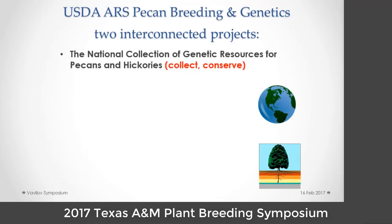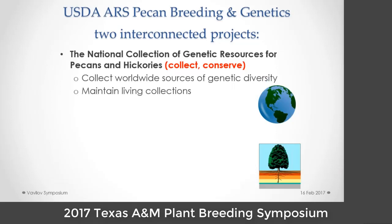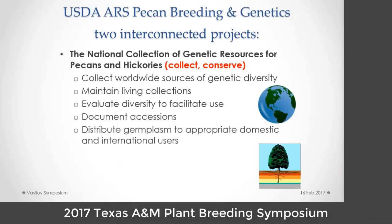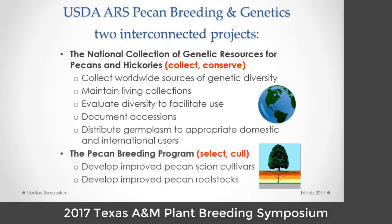We elected a dynamic strategy of provenance collections, primarily because Bruce Wood had been trained in forestry and knew the value of collecting across the range and characterizing diversity in relation to origin. We knew that our primary interest from our industry was in cultivar collections, so we maintained those, but we also wanted to represent the wild species. So we have two projects in our unit. The National Collection of Genetic Resources collects from world sources of genetic diversity.